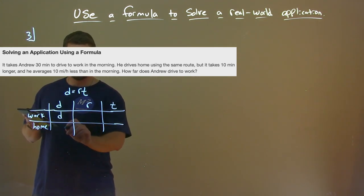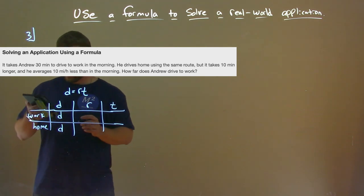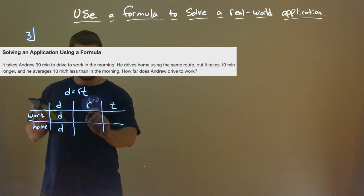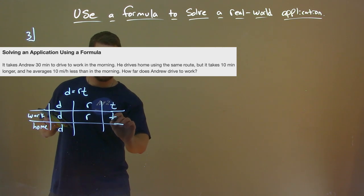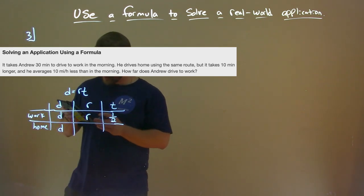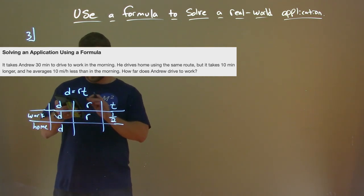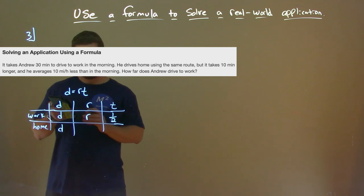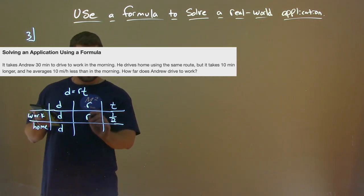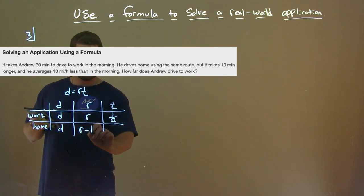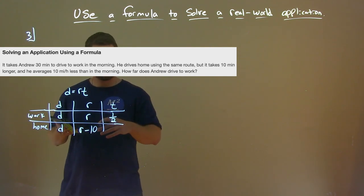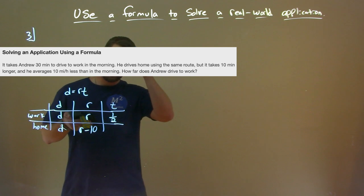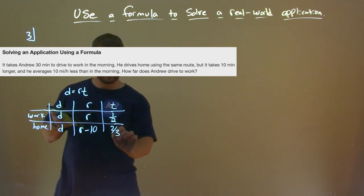The distance to work and the distance home, they told us, is the same. Our rate going to work, let's call it R, and the time is 30 minutes, which equals one-half hour. On his way home, it takes 10 minutes longer and he averages 10 miles per hour less. So the rate going home is R minus 10, and the time is 40 minutes, which is two-thirds of an hour.